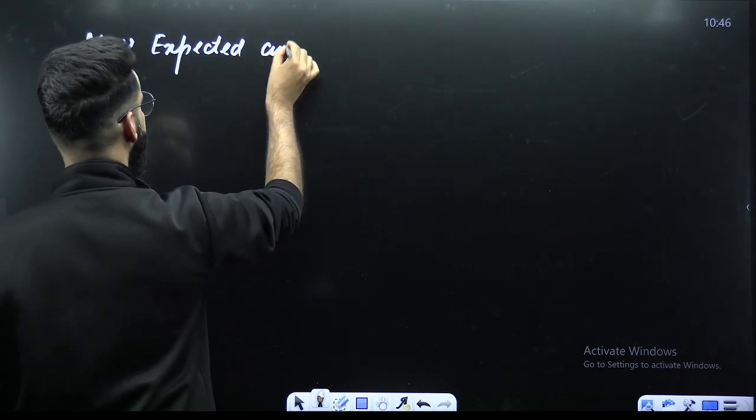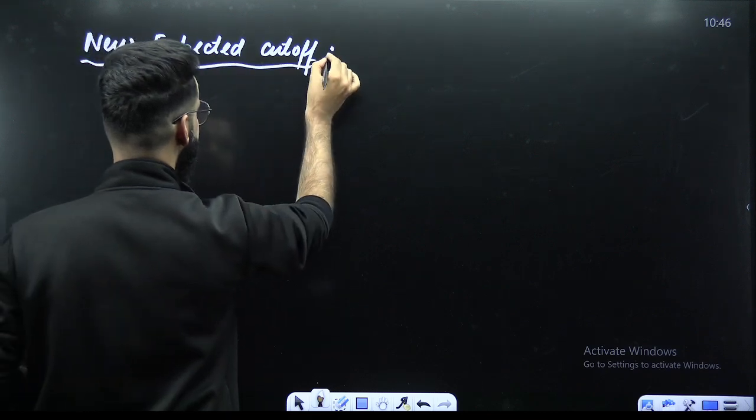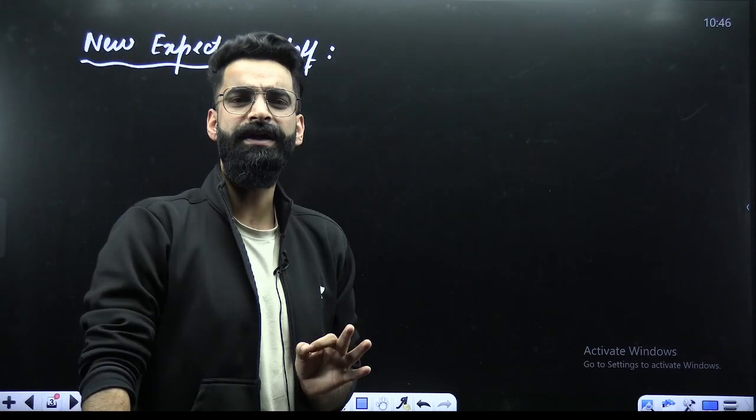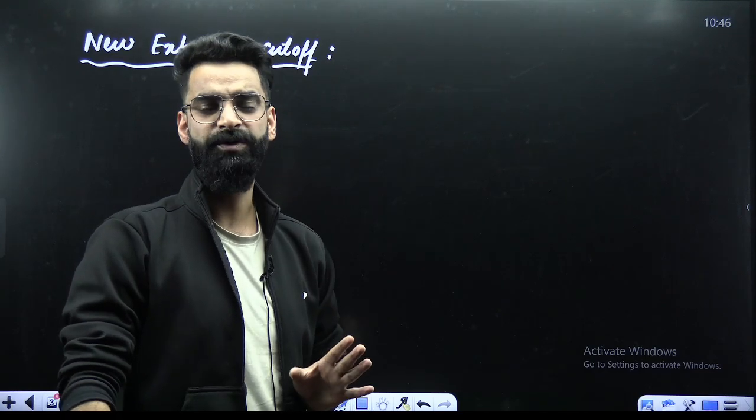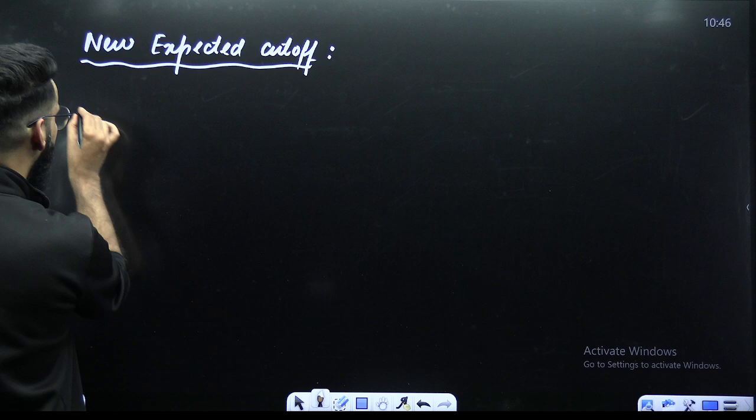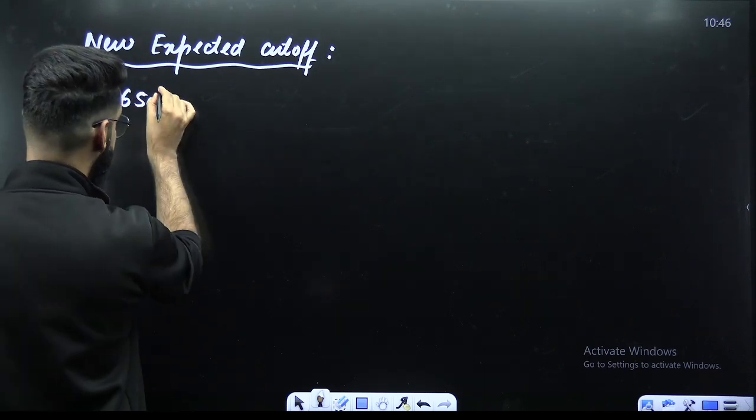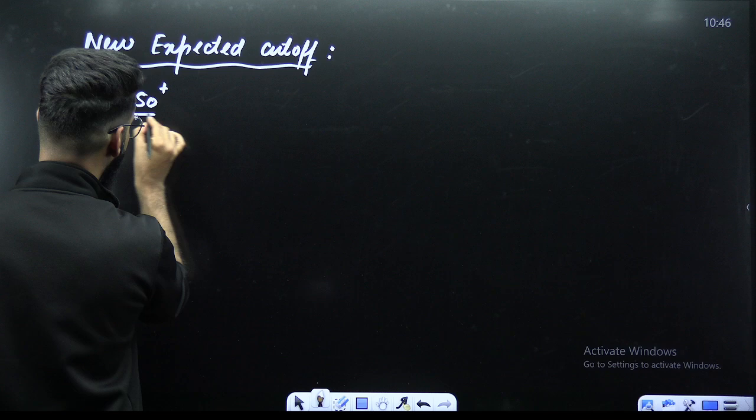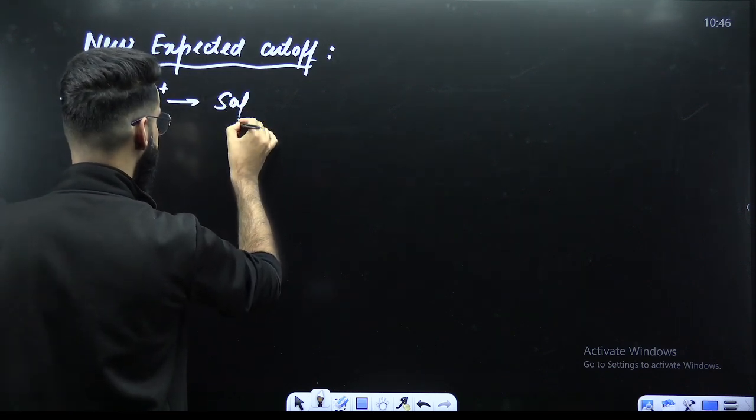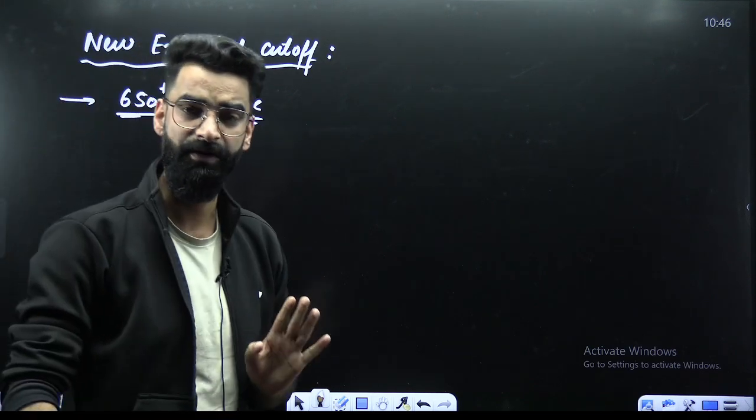So if I write the new expected cutoff, what exactly is it going to be? Earlier I used to tell you all those students who are scoring 655 plus marks in the NEET 2024, they are safe. They will be getting the medical college. Now you can expect it as, instead of 655, you can expect it as 650. So all those students who are getting 650 plus in the NEET 2024 examination, yes you are safe. You will be getting into the medical college.